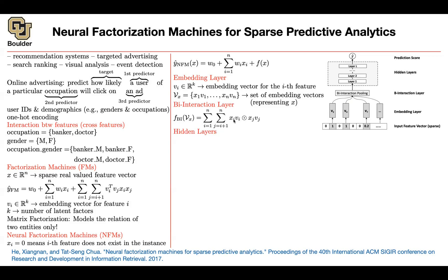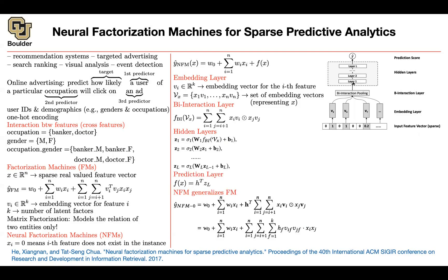Once you have that pooled vector from the bi-interaction layer, you push it through multiple layers of a deep neural network — matrix-vector multiplications, biases, and non-linearities — up to a prediction layer. At the end, a vector h multiplied element-wise gives a scalar prediction. To recover the original factorization machine, remove the hidden layers (identity) and set h to all ones, which turns the operation into a dot product — exactly the original FM formula.